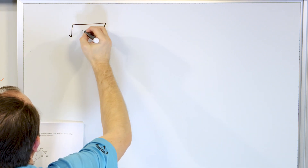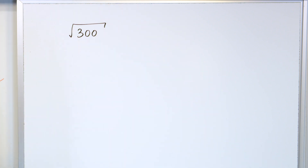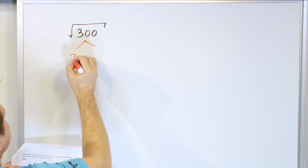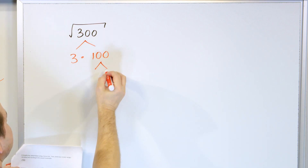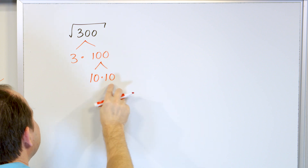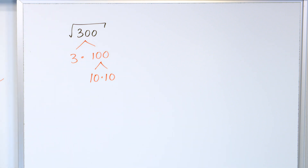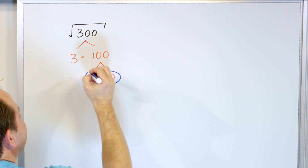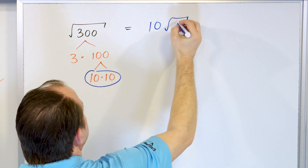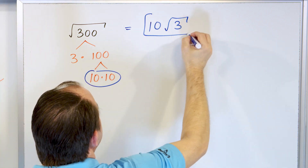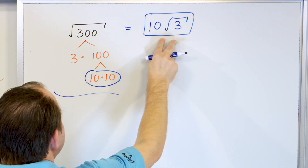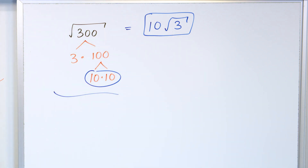Square root of 300. I'll write this as 3 times 100. For 100, I'll use 10 times 10 because I know it's a pair right away. Since I'm looking at square roots, as soon as I see that pair I can circle it and stop. The single 10 comes out of the radical, but the 3 has to stay behind under the radical because it has no partner. The answer is 10 times the square root of 3. If you square this, you get 300 back.